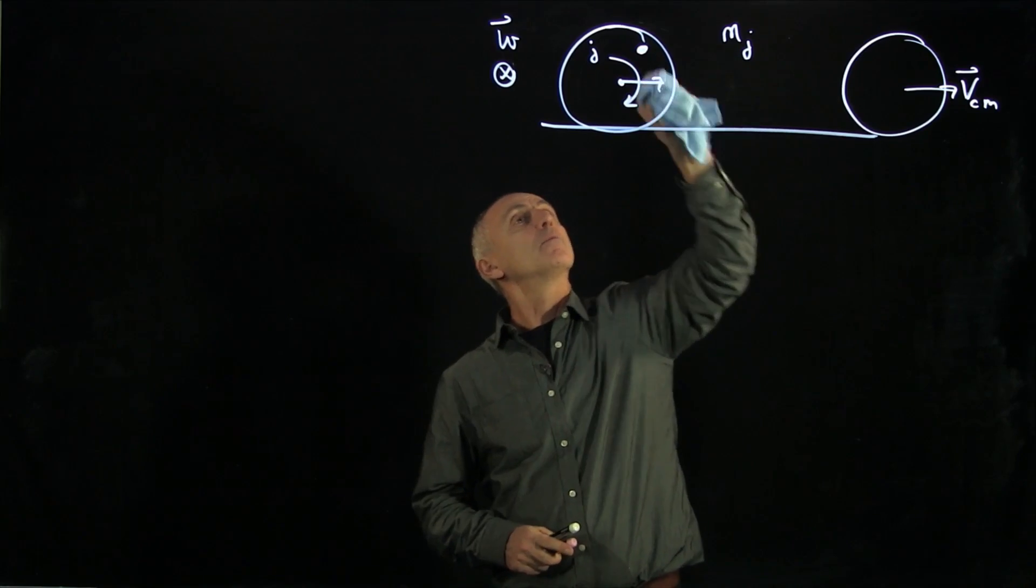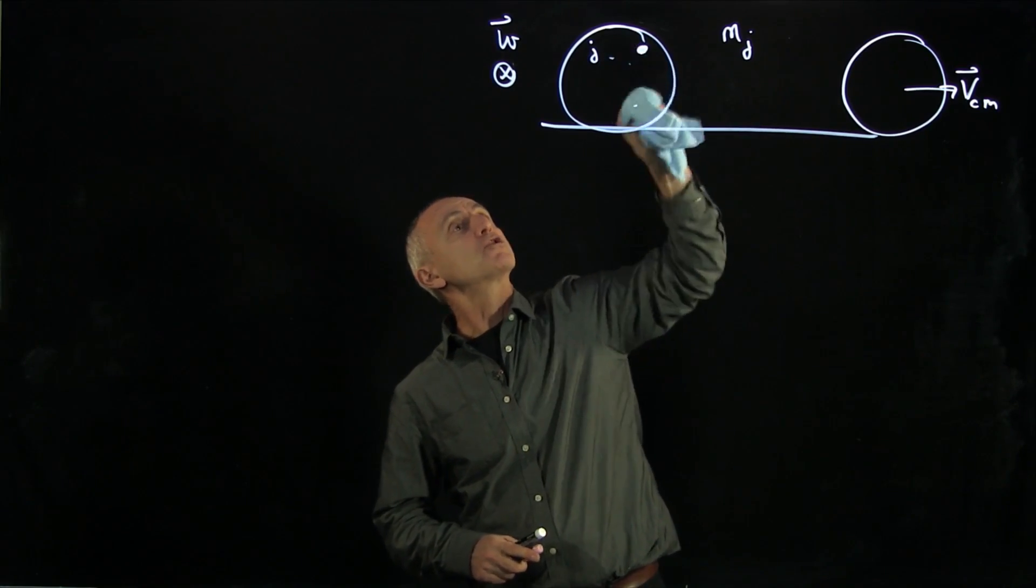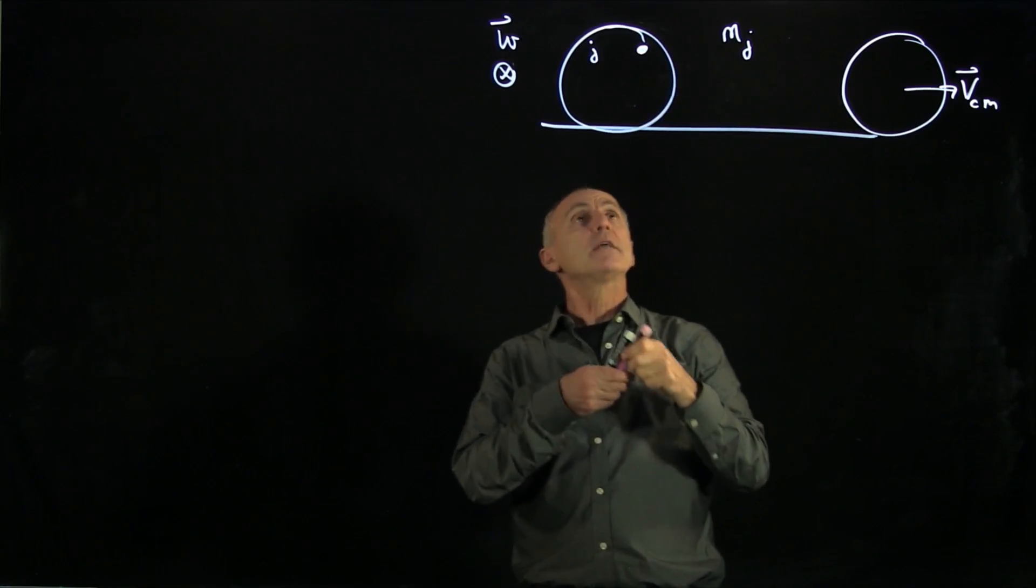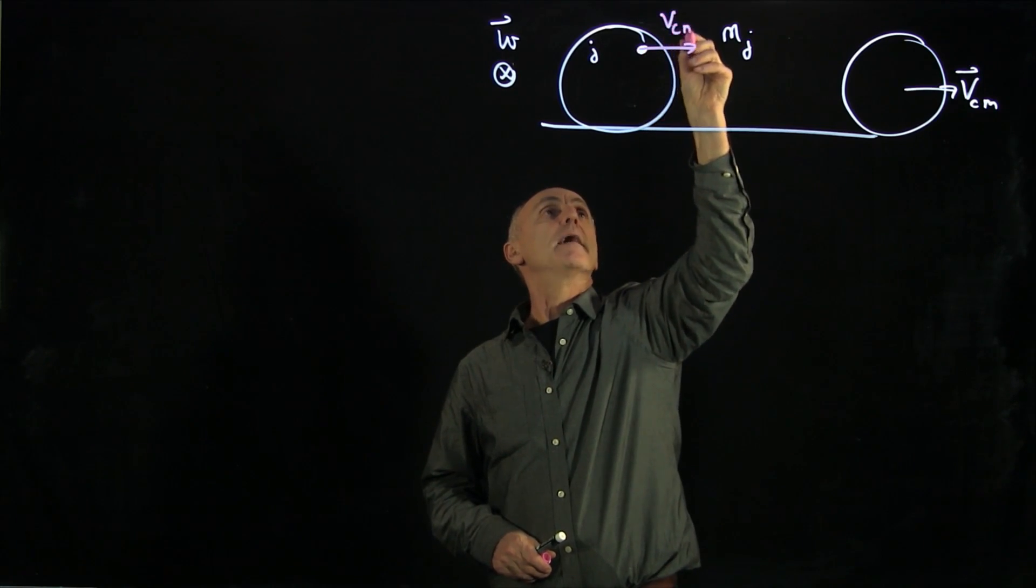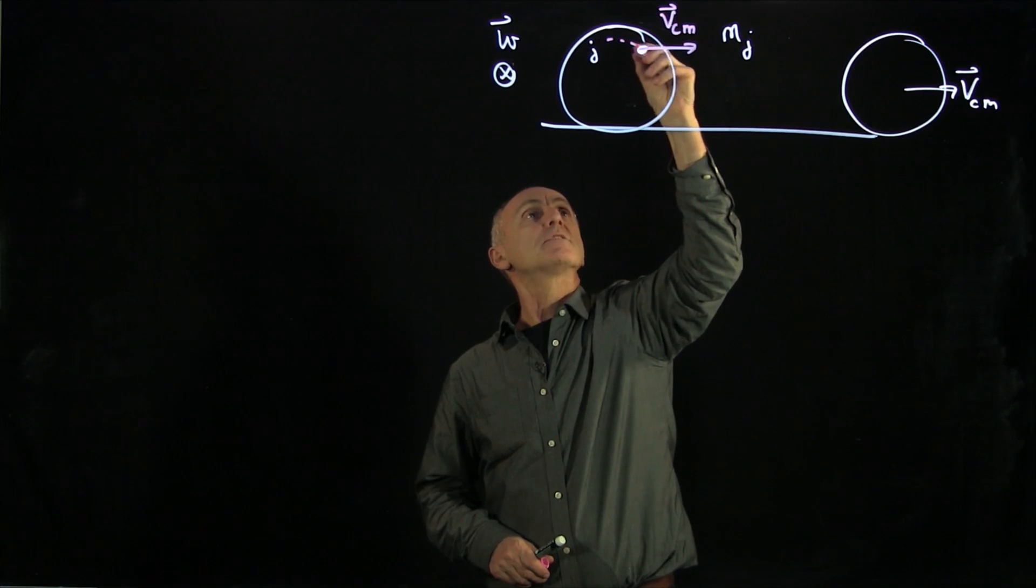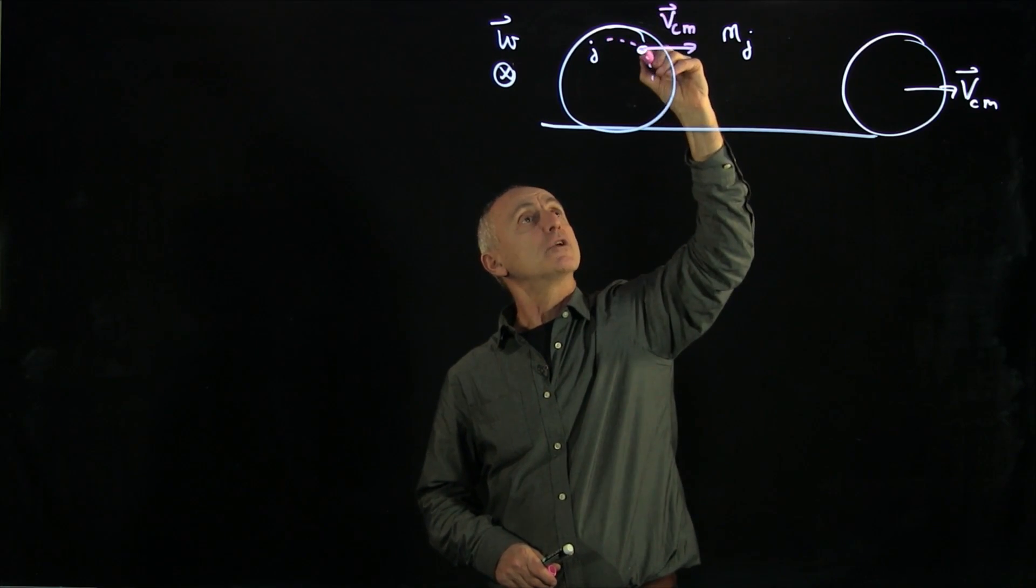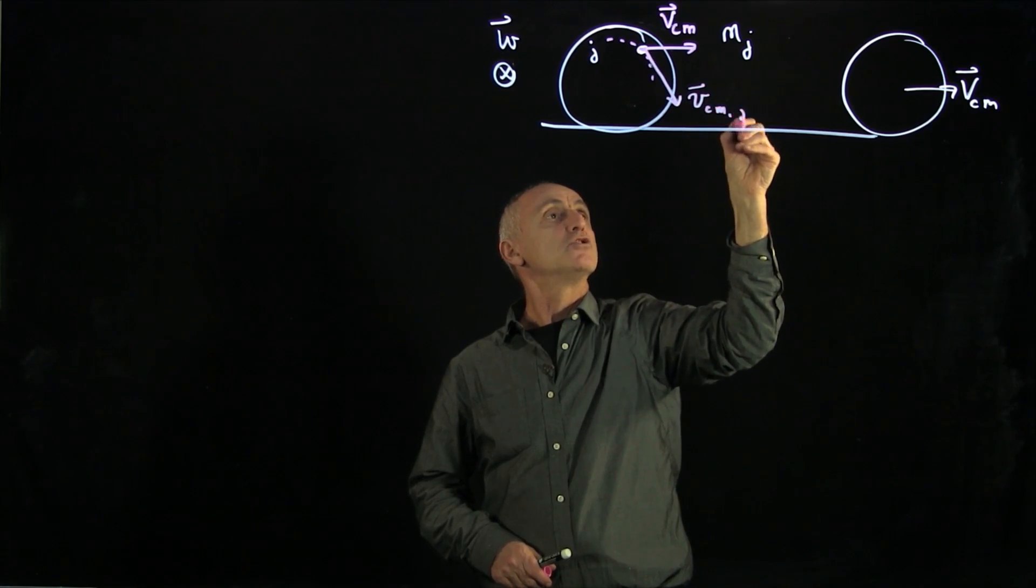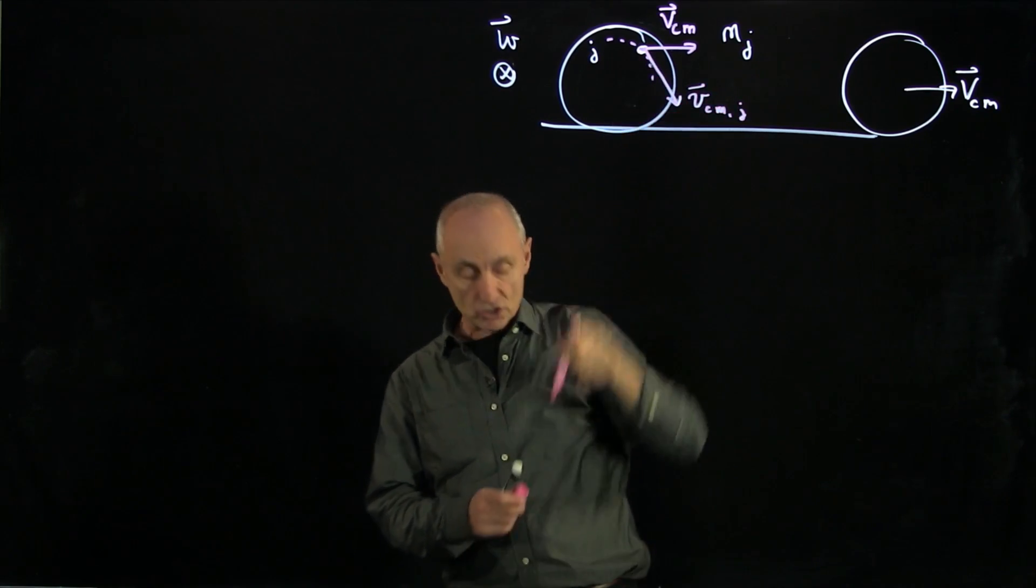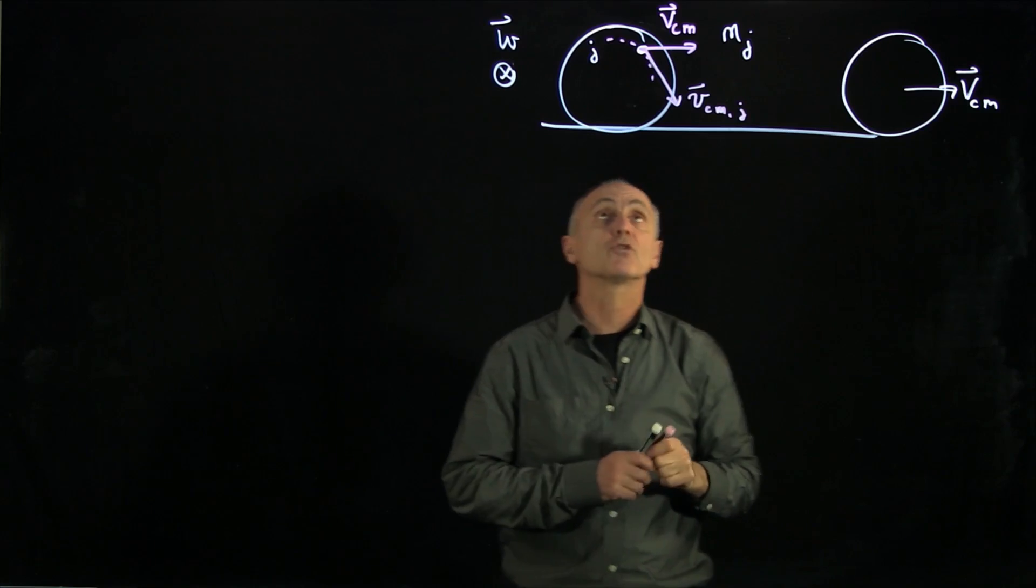To simplify it, we'll give ourselves a little more picture here. The point has, every single point in the object has the vcm. But because this object is undergoing circular motion, there is vcmj. That's the rotational circular tangential velocity.